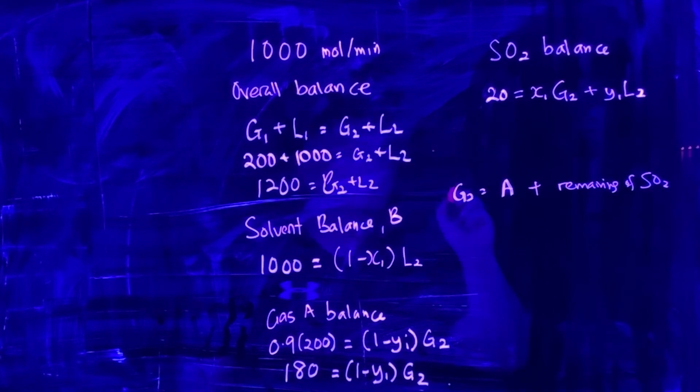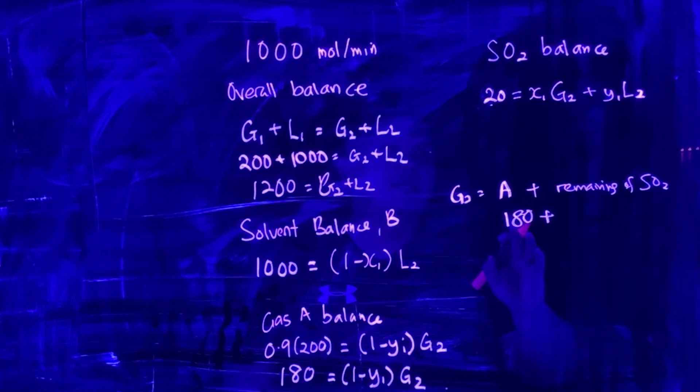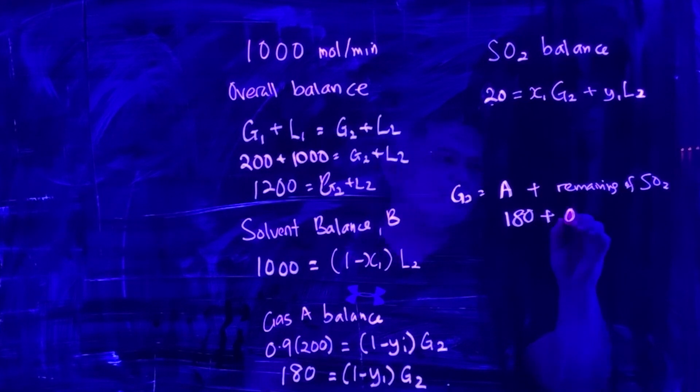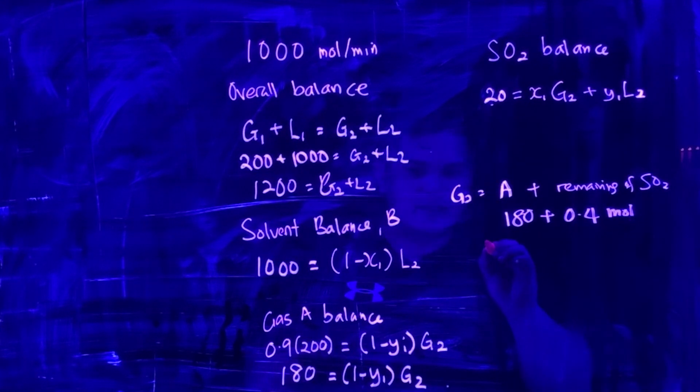Gas A is 0.9 × 200, which is 180. For the remaining SO2, only 2% is not absorbed by the solvent, so 2% × 20 gives 0.4 mole per minute. Altogether, you have 180.4 mole per minute.